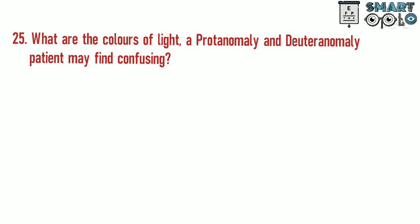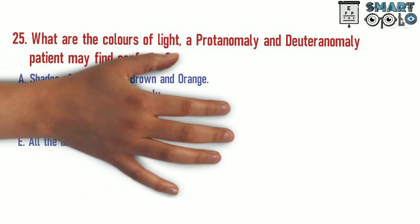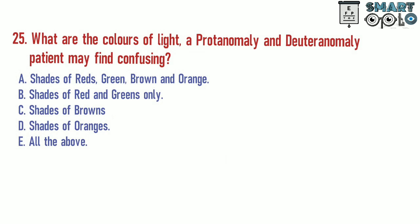Question 25. What are the colors of light a protanomaly and a deuteranomaly patient may find confusing? A. Shades of red, green, brown, and orange. B. Shades of red and green only. C. Shades of brown. D. Shades of orange. E. All of the above.